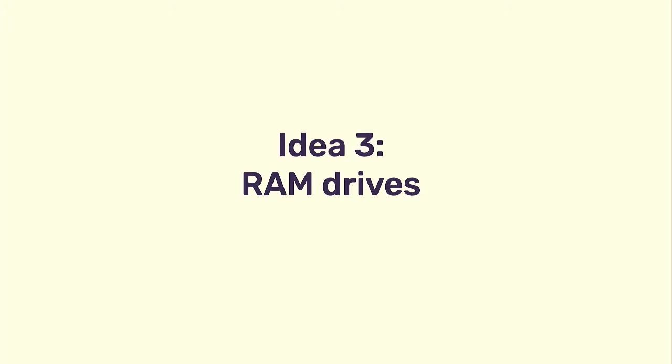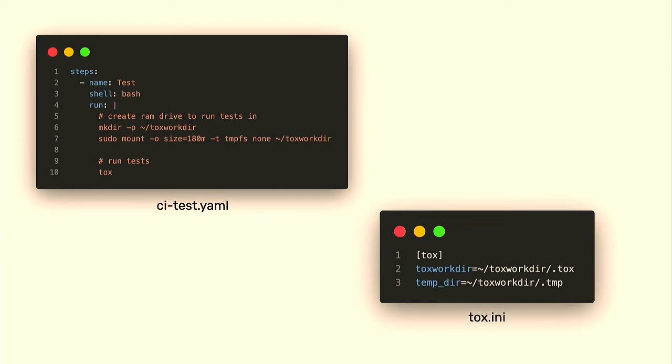The next idea was RAM drives. RAM drives are a directory in your file system that sits in memory rather than on disk — and memory is still about 50 times faster than SSDs. I was worried GitHub Actions wouldn't allow RAM drives, but it turns out you can create them. I used mkdir and then a sudo mount command to assign a certain number of megabytes in memory to a directory — in this case, 180 megabytes. Then in our Tox config, I told Tox to use this directory as its workdir and tempdir, so virtual environments are created in memory rather than on disk.